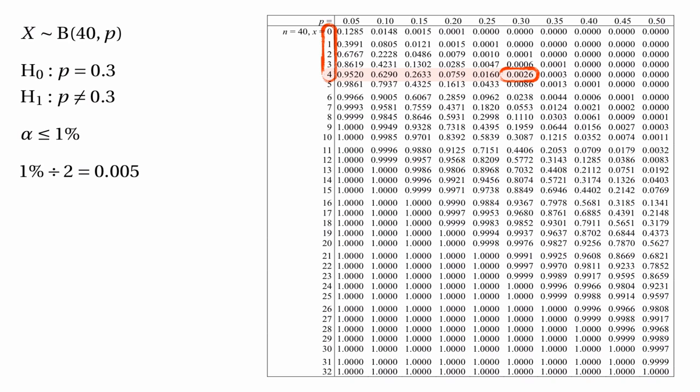Next we scan up the same column, looking for 1 minus 0.005 which is 0.995. Scanning up the column headed by 0.3 until we reach 0.995, we get to 0.9976 before we can go no further without going below 0.995. That tells us the upper part of the critical region is the numbers 21, 22 and above — remembering we go along the row one below the circled probability. So the critical region consists of 0, 1, 2, 3, 4 together with 21, 22 and up to 40, the total number of trials.